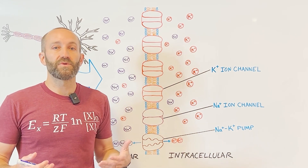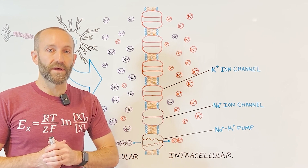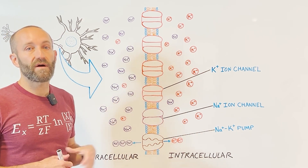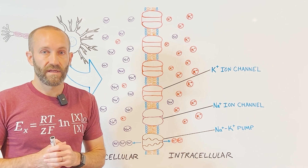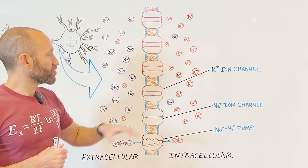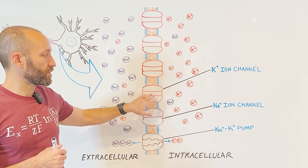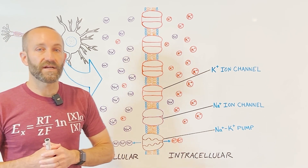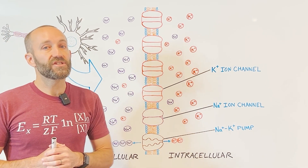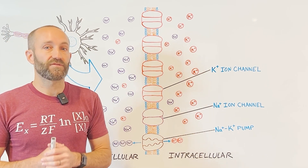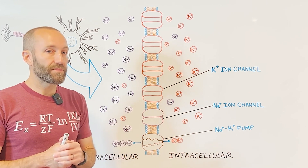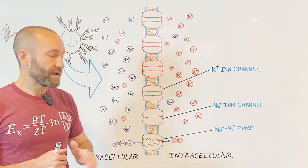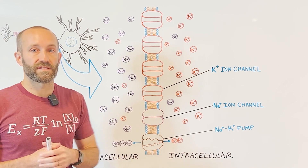This unequal distribution of ions is maintained in multiple ways. First, the membrane of the cell doesn't allow ions to easily pass across it. Instead, they need to travel through tube-like pores that span the membrane. These pores are called ion channels. Many ion channels are specific for certain ions — there are, for example, ion channels that allow potassium to cross the cell membrane, and other ion channels that allow sodium to cross the cell membrane.